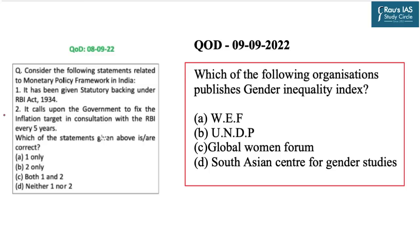Now is the time for the question of the day. The question asked in yesterday's DNS was in relation to the monetary policy framework in India. Statement one was: it has been given statutory backing under the RBI Act 1934. Statement two was: it calls upon the government to fix the inflation target in consultation with the RBI every five years. Both statements are correct and therefore option C — both one and two — is the correct answer.